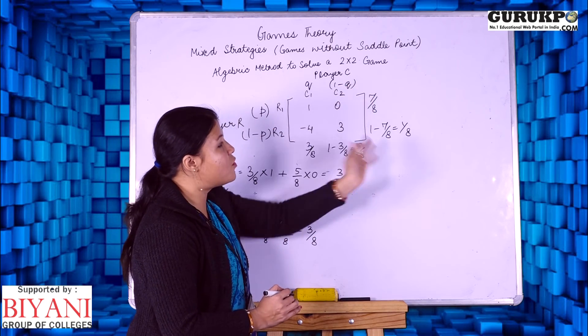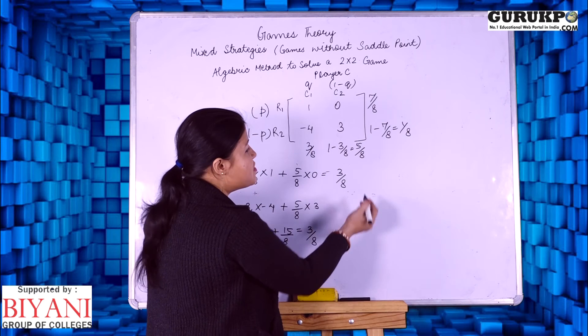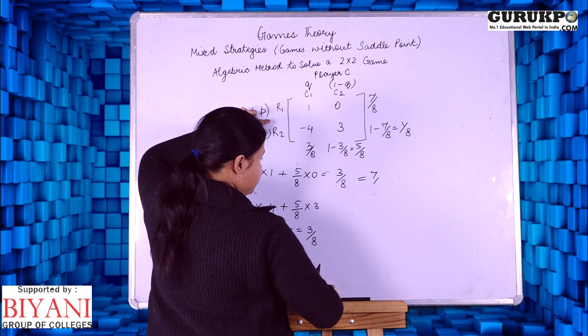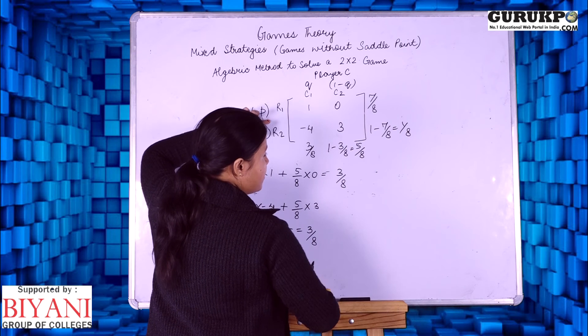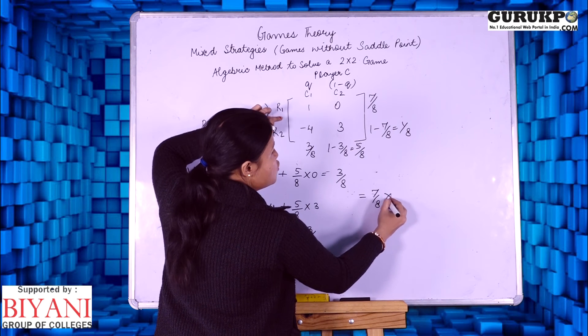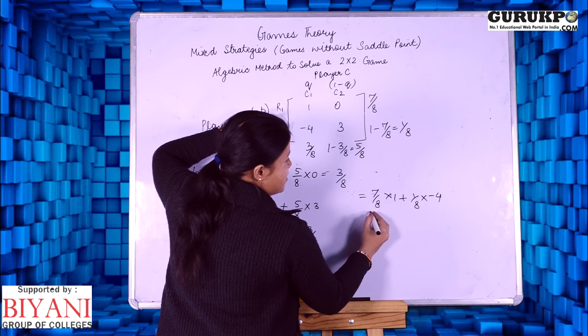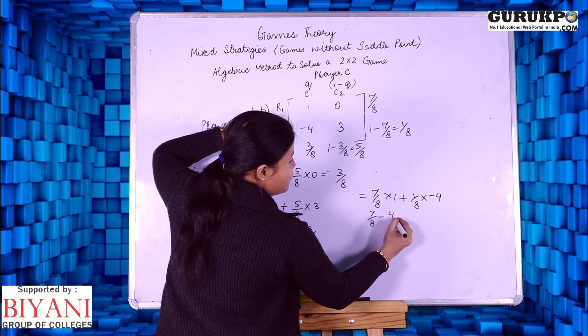If we take the strategy for row player, the same value of game arrives. For example, 7 by 8 into 1 plus 1 by 8 into minus 4. This is 7 by 8 minus 4 by 8. Again, it comes to 3 by 8.